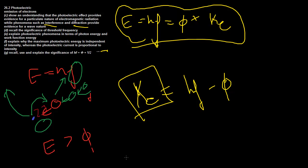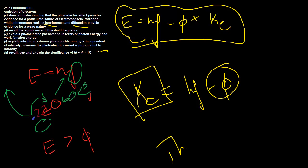What happens to the energy when it's below the threshold frequency? Very simply, it gets turned into heat, because the electrons emit it again. So it turns into heat.